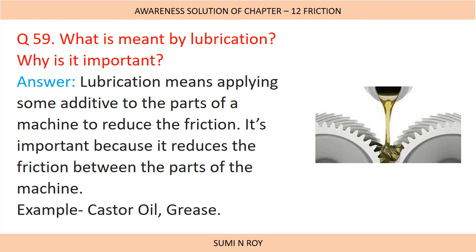Next question: What is meant by lubrication and why is it important? Lubrication means applying a substance to the parts of a machine to reduce friction. It is important because it reduces friction between the parts of the machine. Examples of lubricants are castor oil and grease, which are used in machines to reduce friction so that the machine parts do not wear and tear with continuous use.